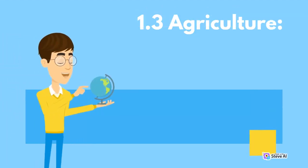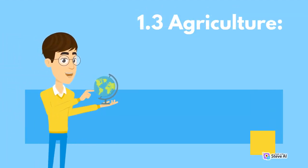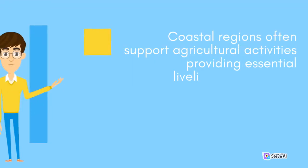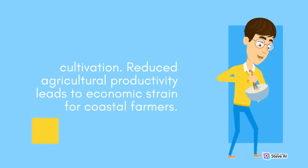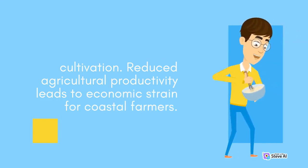1.3 Agriculture. Coastal regions often support agricultural activities, providing essential livelihoods. However, salinization caused by the intrusion of saltwater due to erosion renders fertile soil unusable for crop cultivation. Reduced agricultural productivity leads to economic strain for coastal farmers.